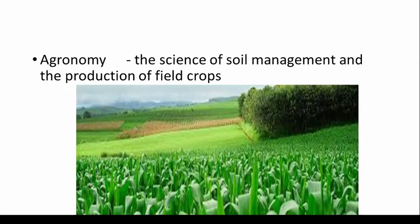Agronomy is basically the study of the science of soil management and the production of field crops. There are 4 to 5 types of soils, and managing the soil in a geographical area along with the production of field crops — that study comes under agronomy.